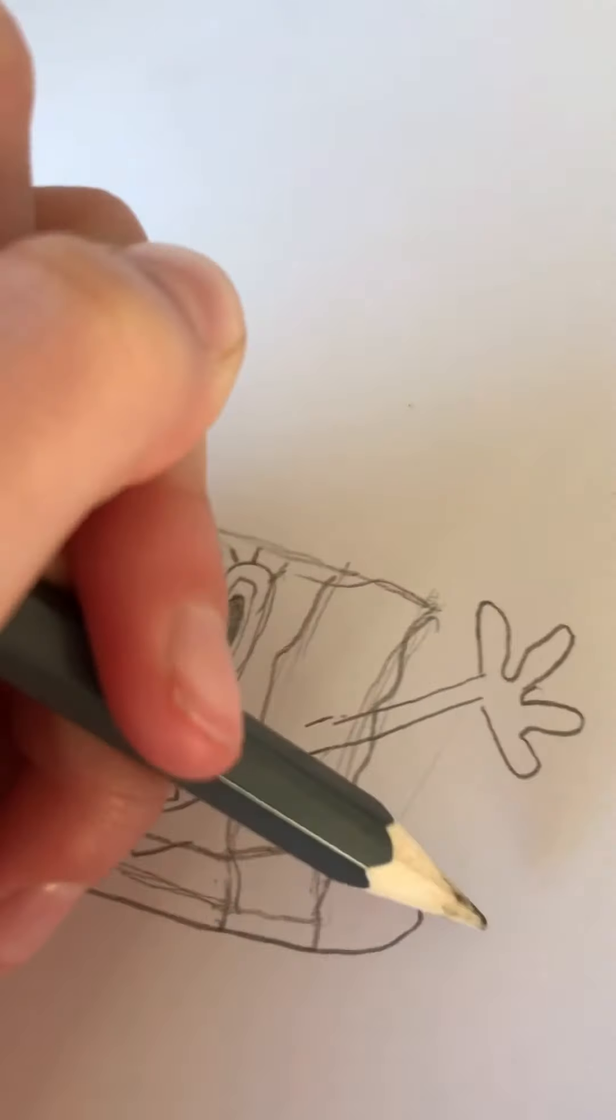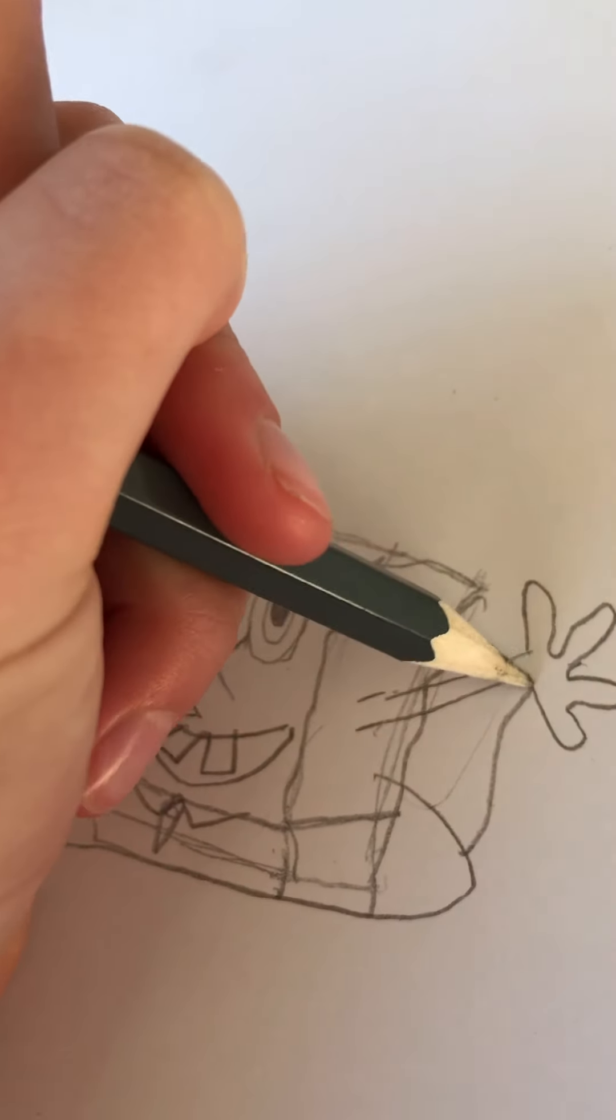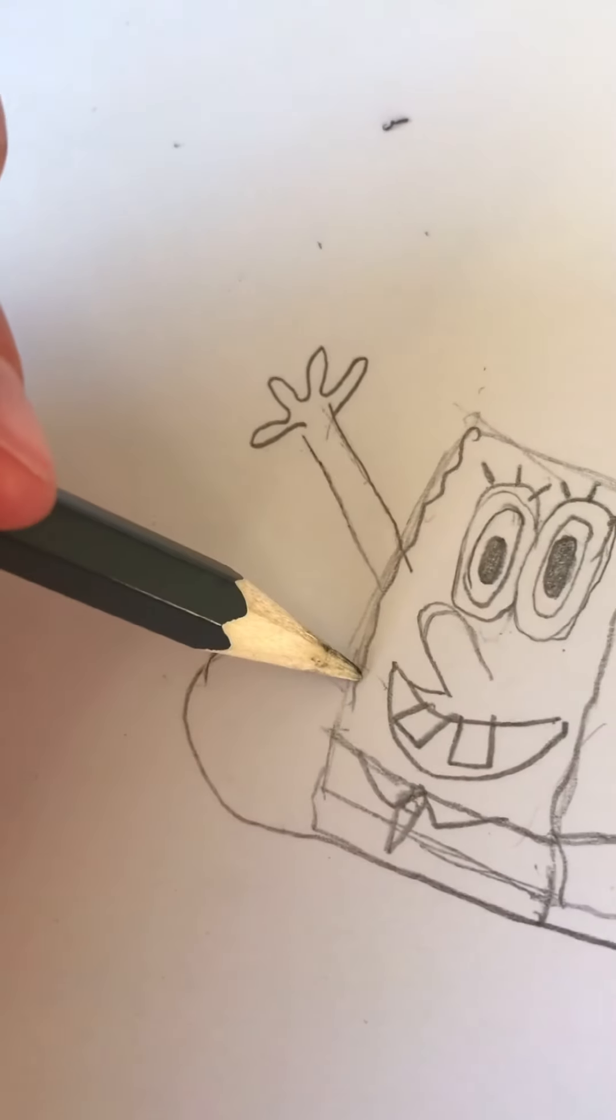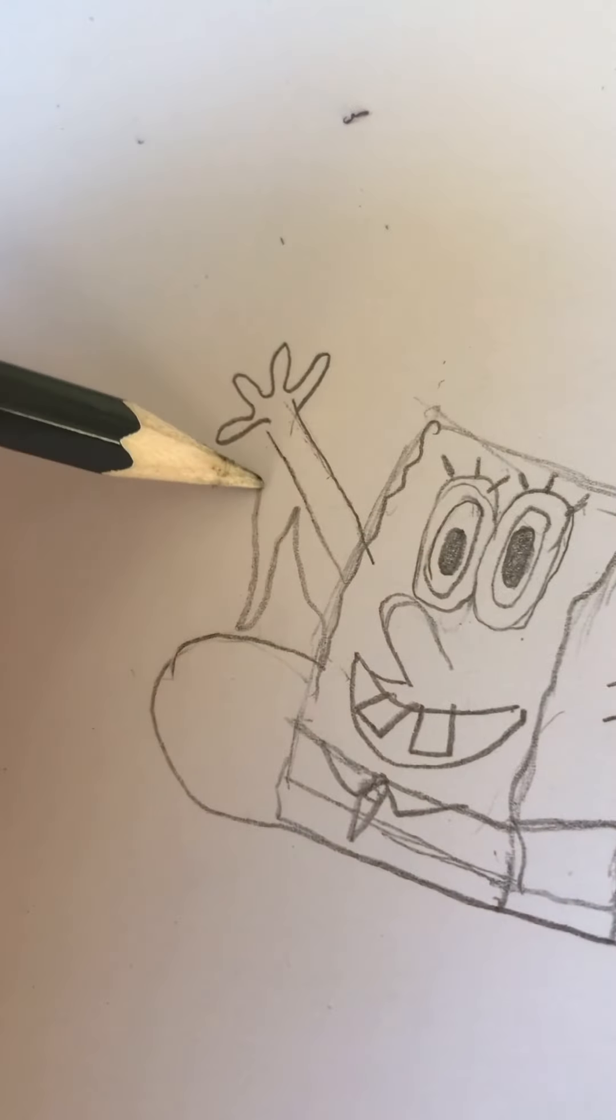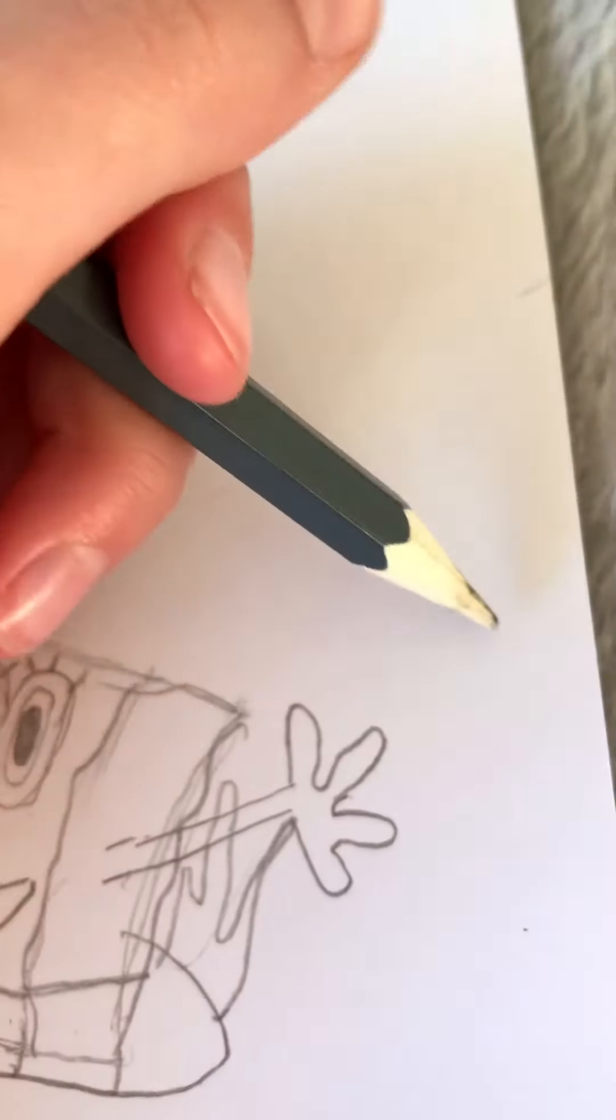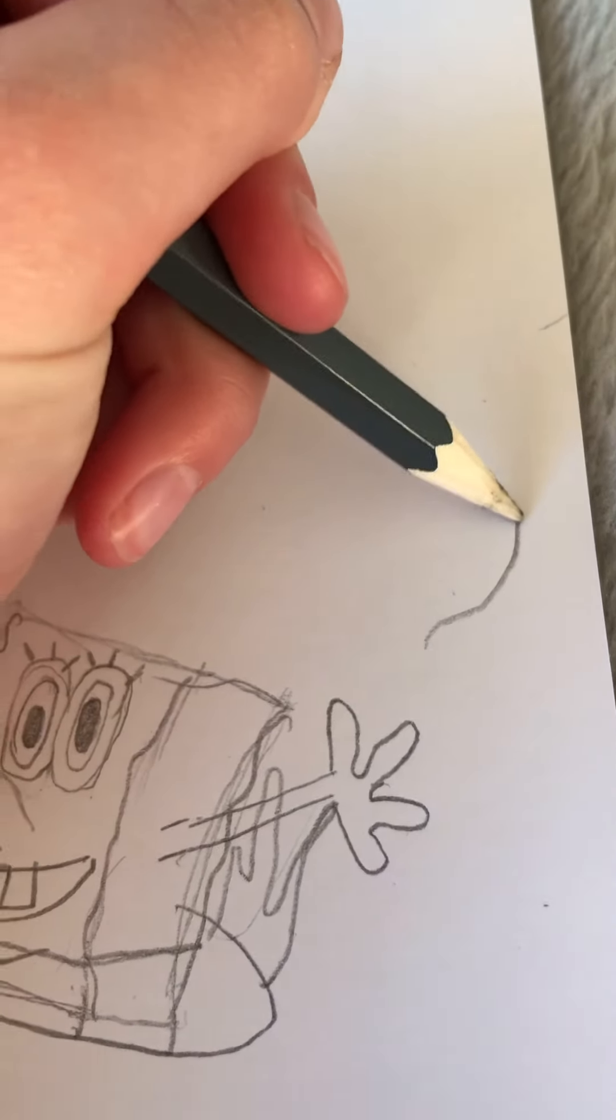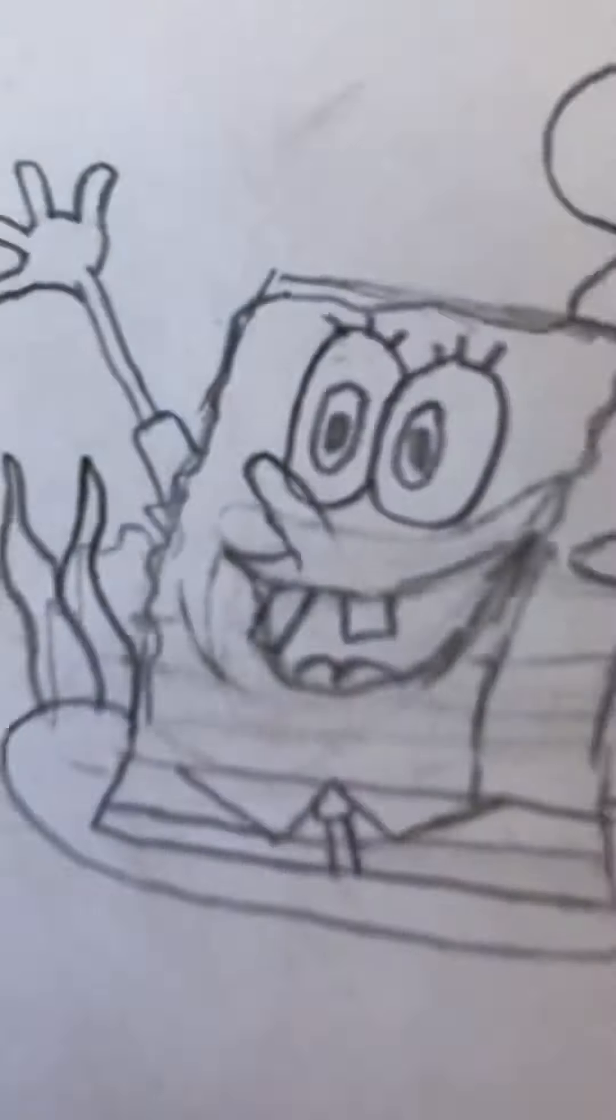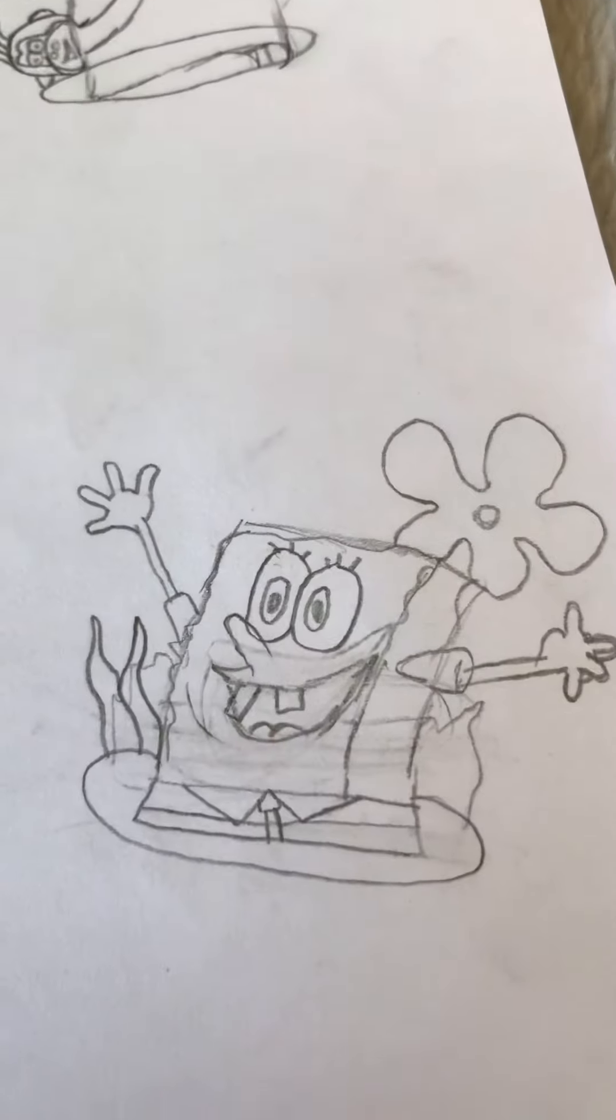Then you can add some squiggly lines like that and erase the straight line. Then add some decoration around him. I'm going to do some seaweed. And then if you search up like a background for SpongeBob, you'll see that he has that weird star thing. So that's what I'm going to draw. When we're done, you should have something like this. I'm going to color it. Wait there.